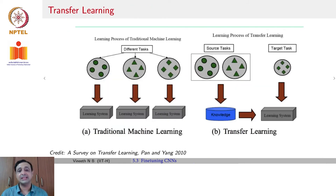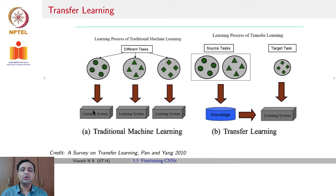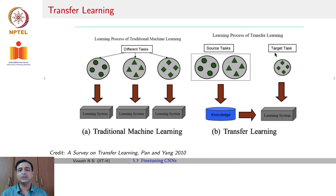Can we use this understanding of how CNN filters learn to design architectures better for newer tasks and newer domains? The answer is yes — there is a setting in machine learning known as transfer learning. In traditional machine learning, different tasks each had a separate dataset and a separate model. In transfer learning, you have a set of source tasks and a target task on which you want to perform well — that is the new domain or new task you want to solve.